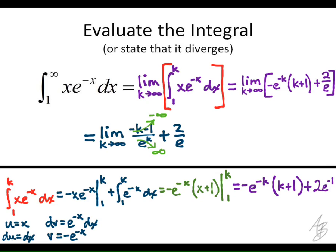So if we get negative infinity over infinity, that is an indeterminate form, which means we can use L'Hopital's rule.